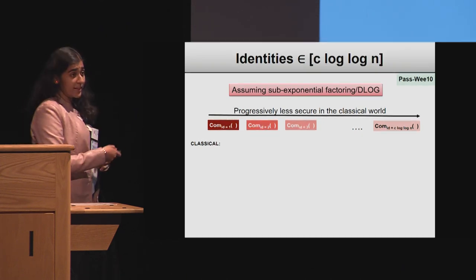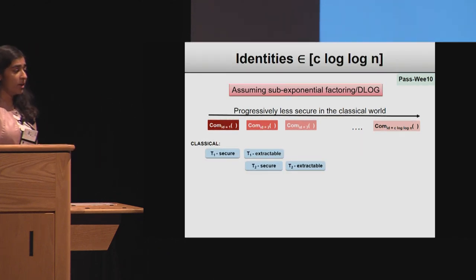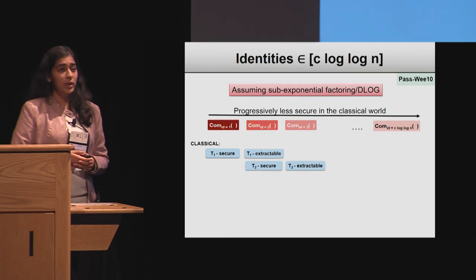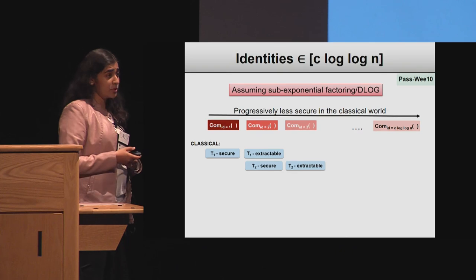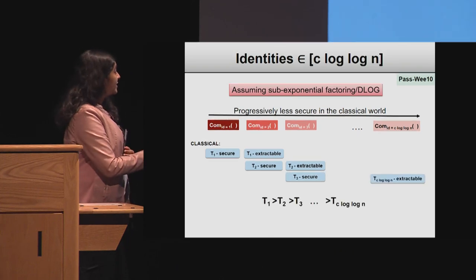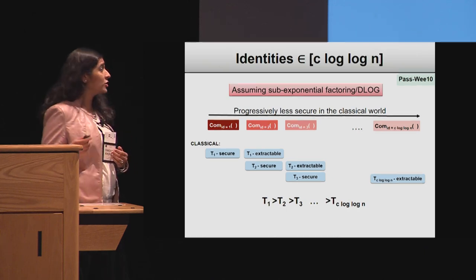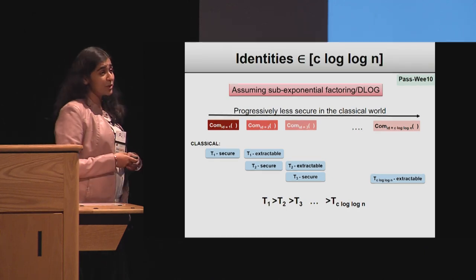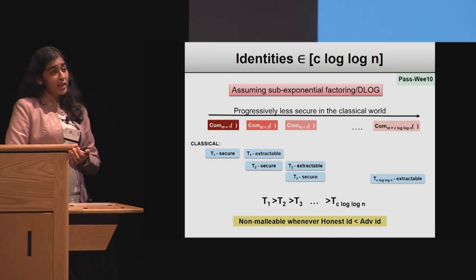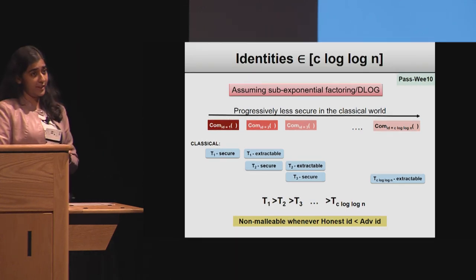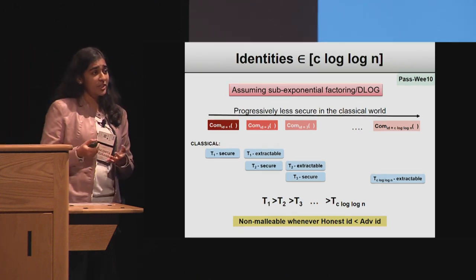In classical time t1, the commitment with identity 1 is secure, whereas the commitment with identity 2 can be broken. The commitment with identity 2 is secure for some smaller time t2, whereas the commitment with identity 3 breaks down in this time. As a result, the sequence of commitments gives us non-malleable commitments that are non-malleable whenever the honest identity is smaller than the adversary's identity. By this logic, you can break the adversary's commitment and extract his value. And if this is correlated with the honest party's committed value, then you have a distinguisher for the honest party commitment — so it better not be correlated.